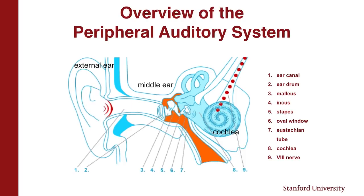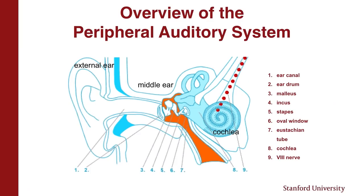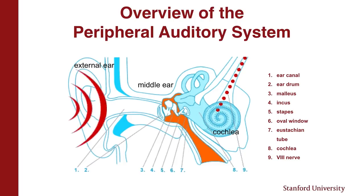Sound will come in, vibrate the eardrum, set these bones of the middle ear into motion, and that transmits the energy into the cochlea. If you have a hearing problem because of a blockage in the external ear or a problem within the middle ear space, these are things we can fix medically. Here at Stanford we do this all the time through surgeries and certain types of medication. But hearing loss that happens in the inner ear — that's the most pervasive form of hearing loss people experience, and that's what I'm going to spend my time talking about today.